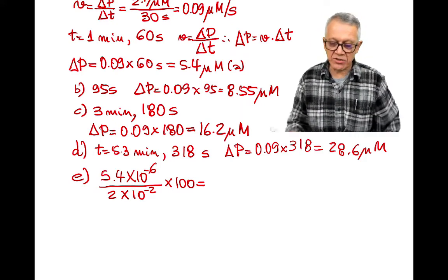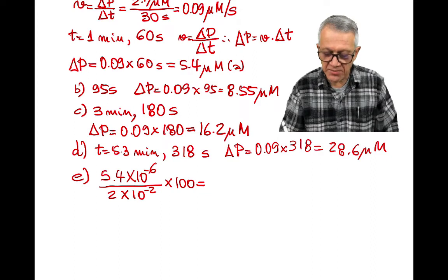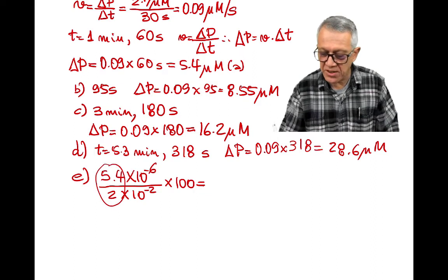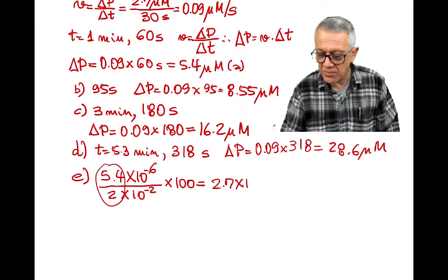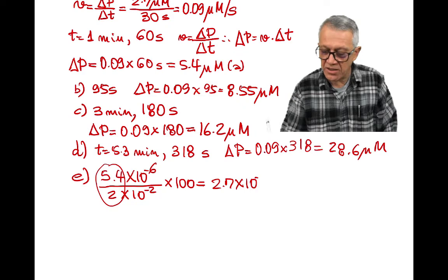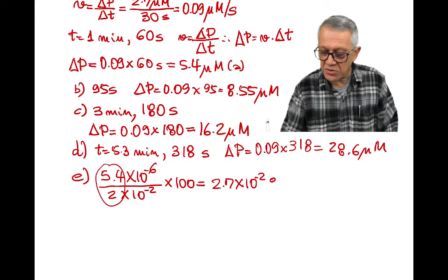What percent of the original substrate was utilized at the time. The first time is at one minute. So let's do this calculation. This is going to be 2.7 times 10 to negative 4. But there's the 100 here, so it's 2.7 times 10 to negative 2 percent.